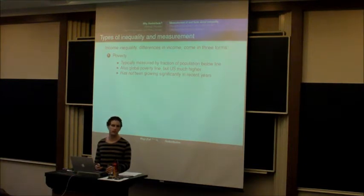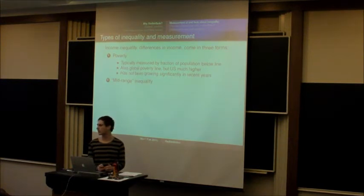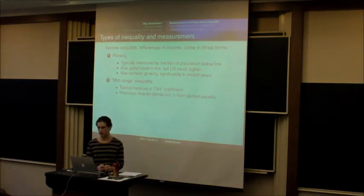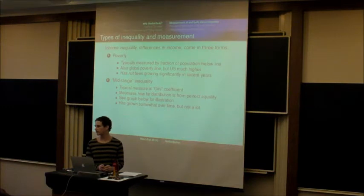Poverty got slightly worse during the 1980s, better during the 1990s, and stayed flat during the 2000s. The second type is what you could call mid-range inequality — how different are people in the lower middle class compared to the upper middle class. This is typically measured by the Gini coefficient, which measures how far a distribution of wealth is from perfect equality. This has grown somewhat over time, but not very much — the Gini coefficient in the United States since the early 80s has increased somewhat, but not a lot.